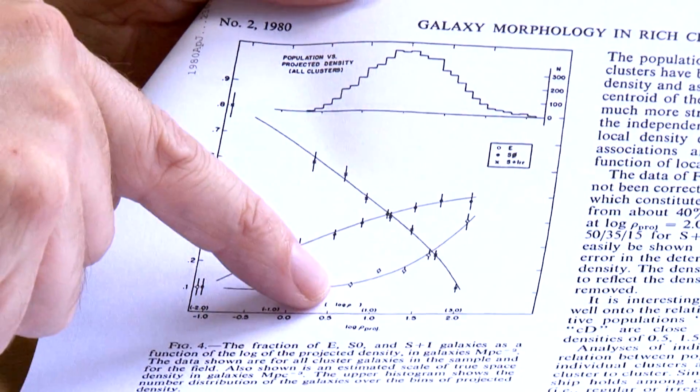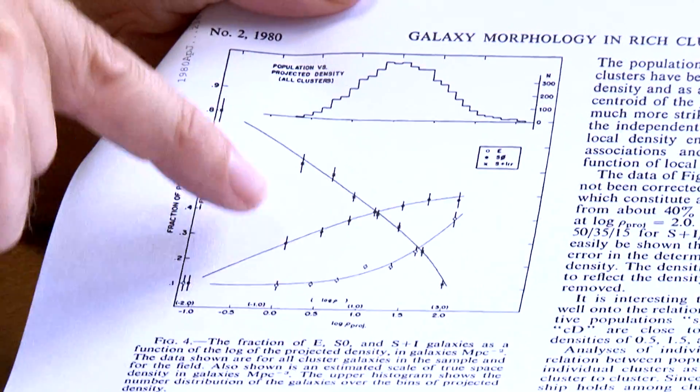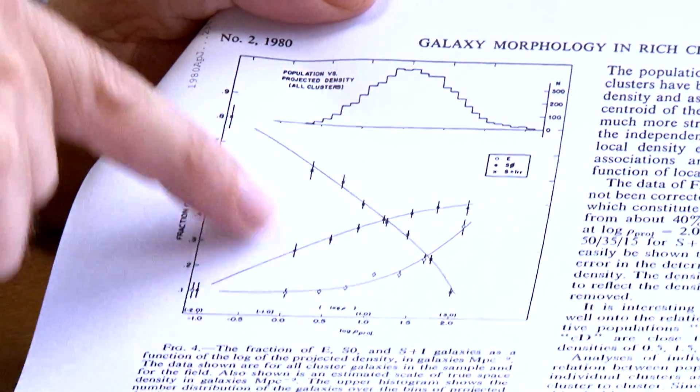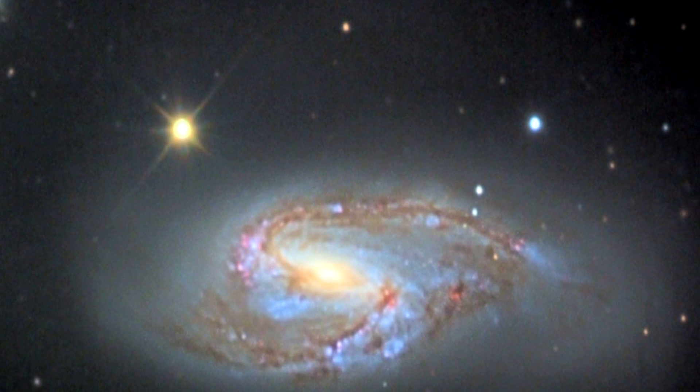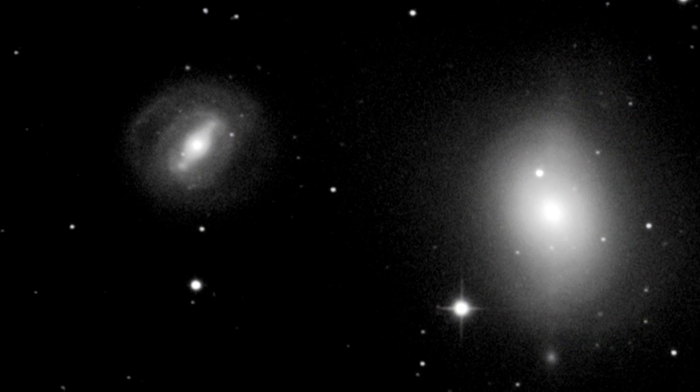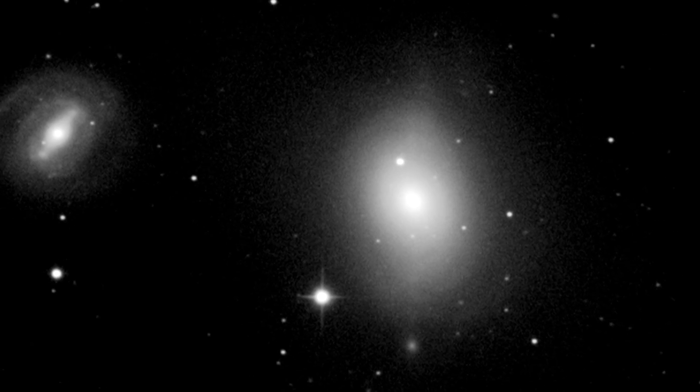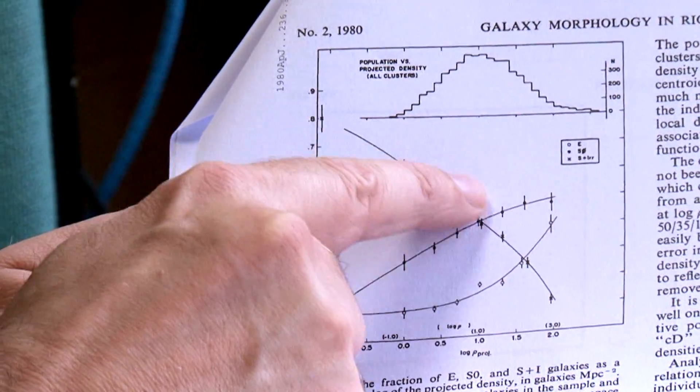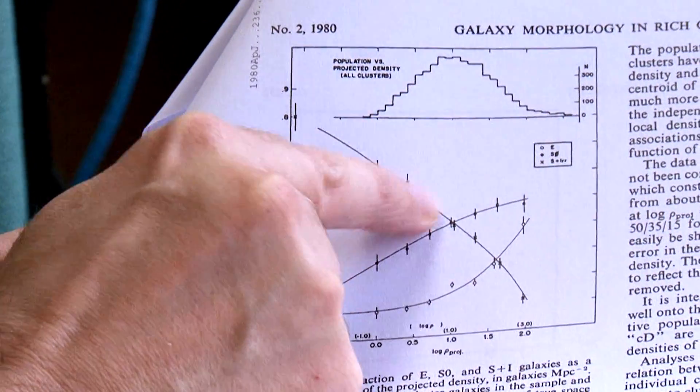If you look at the chart, the S0 line is always above the elliptical line — in other words, whatever environment you're in, there are always more S0 galaxies than elliptical galaxies. So they're actually a more key component of the universe than ellipticals. As the spiral galaxy line goes down, more or less paralleling the S0 line going up, the simplest interpretation is that when a spiral galaxy encounters a denser medium, it gets converted into an S0 galaxy.